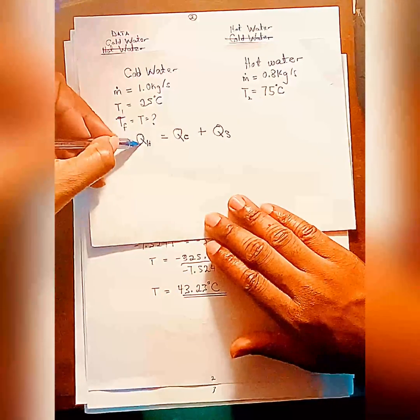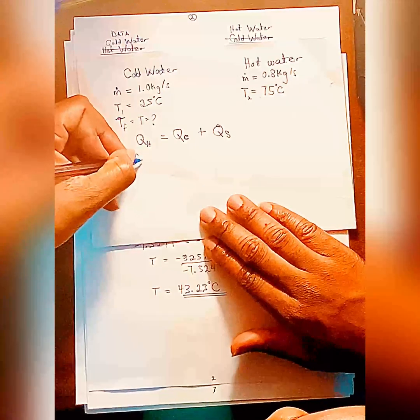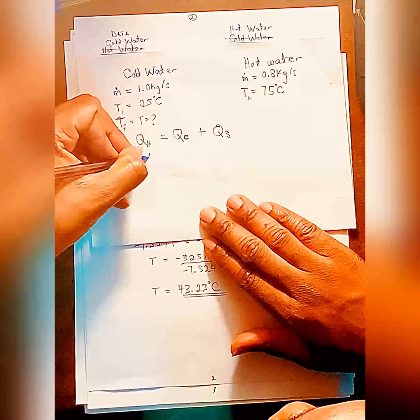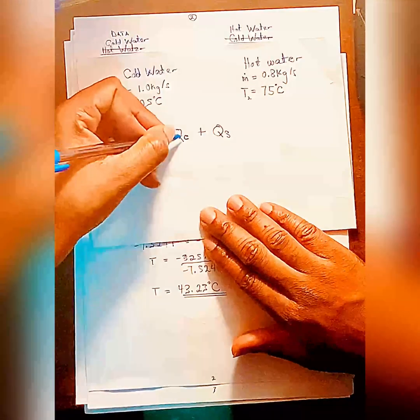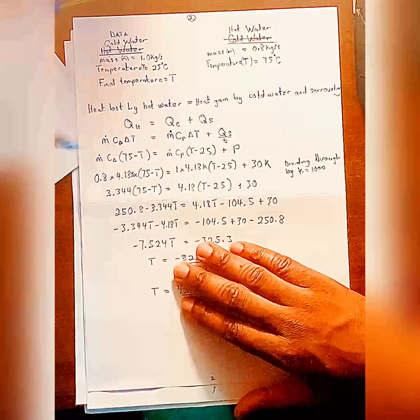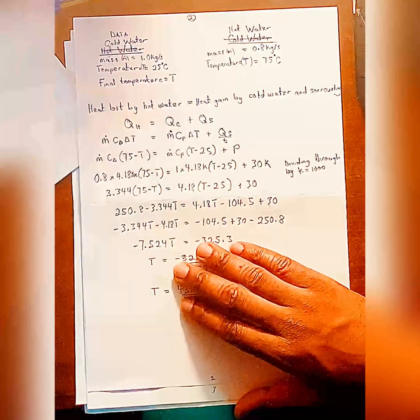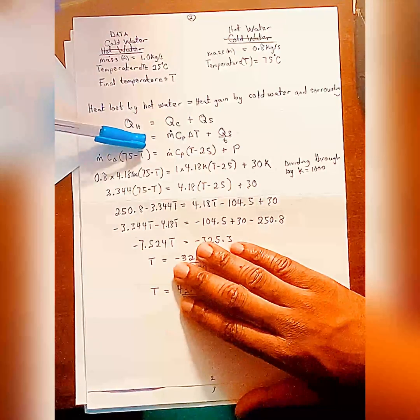So from here, we know how to write our equation. That will be m times CP times change in temperature. So now let's come back. We know heat lost by hot water equals heat gained by cold water plus heat gained by the surrounding. Then we write our expression.